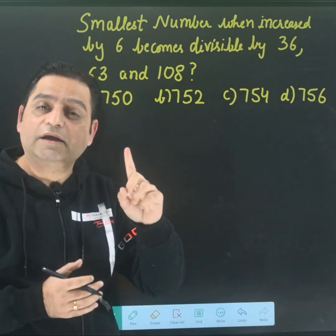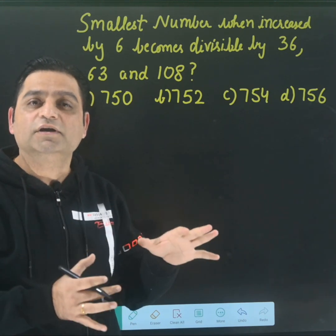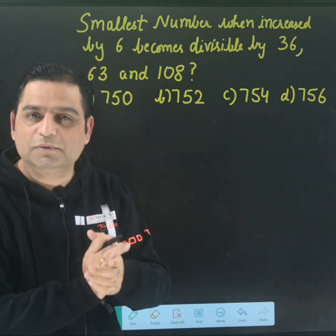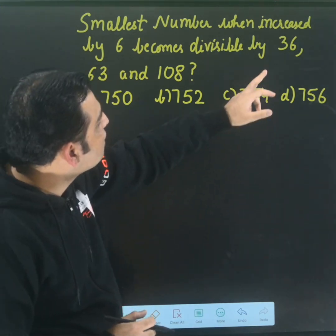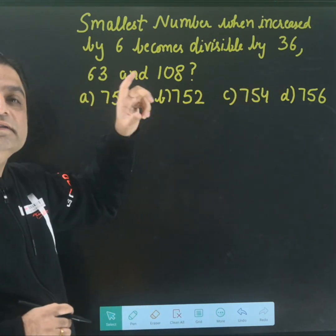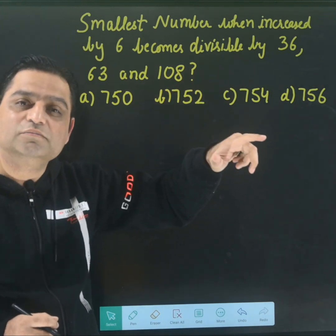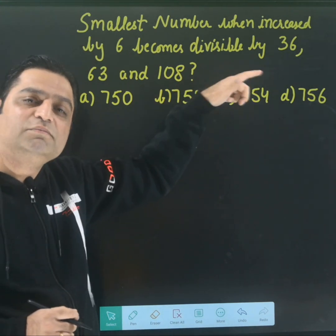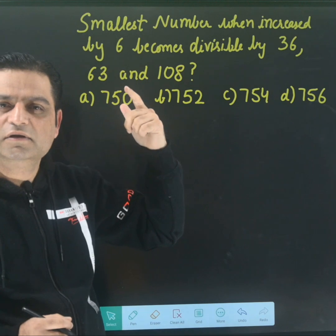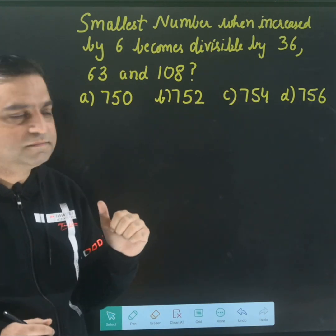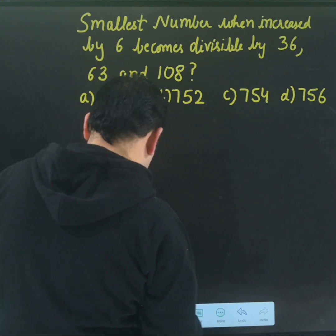When they are talking about the smallest number, LCM comes into picture. That is why we had taught LCM — Least Common Multiple. If we find the LCM of these three numbers, then we will get to know which one is the smallest number divisible by all three. Let us first find that number, and after that we will come to the options.